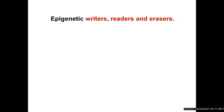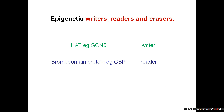We can classify epigenetic factors into writers, readers, and erasers. A writer is something like a HAT — a histone acetyltransferase that puts on a histone modification; GCN5 is an example. A reader is a protein that binds to a modified histone, such as a bromodomain-containing protein that binds acetyl lysine — CBP is an example of a reader. Erasers are enzymes that remove those modifications, such as the histone deacetylases. This terminology of writer, reader, and eraser can help you classify all the different names.